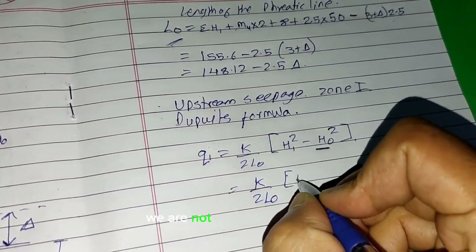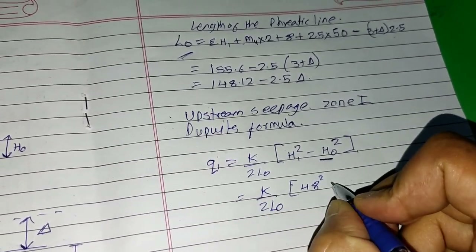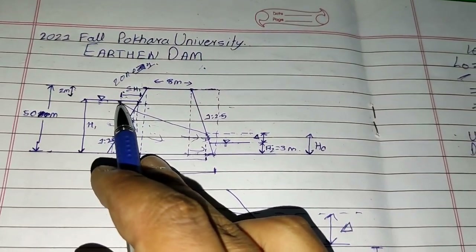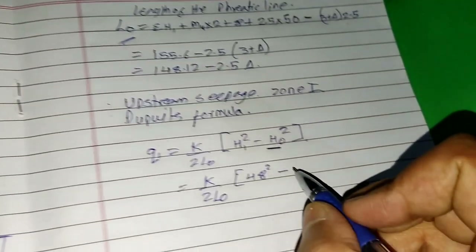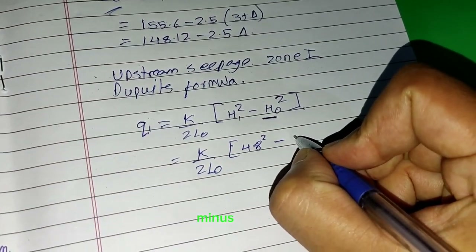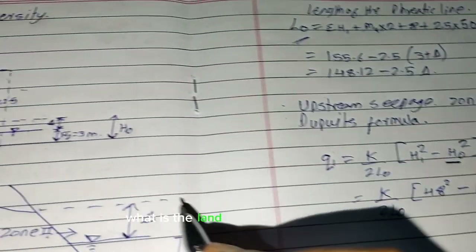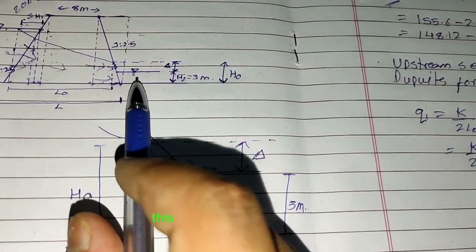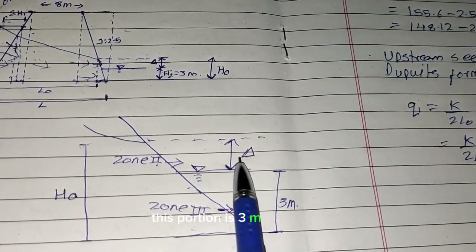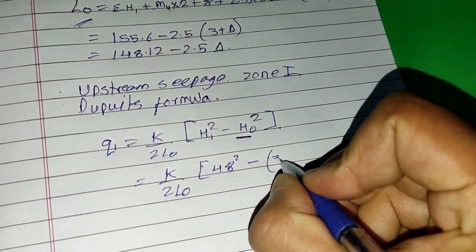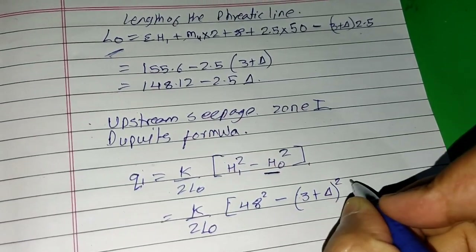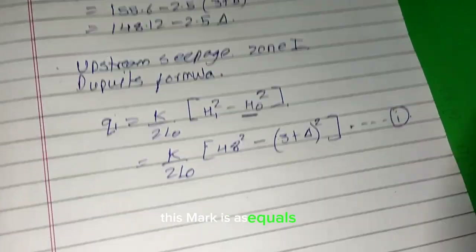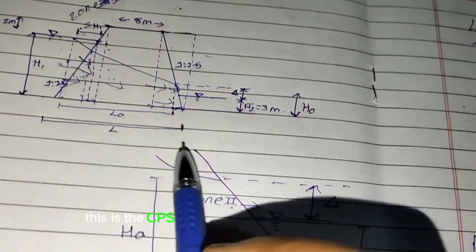Here h₁ is 48 meters, so h₁² = 48². And s₀ is the total height of that lower portion, which is (3 + delta). So the term becomes minus (3 + delta)². This is marked as Equation 1, representing the upstream seepage discharge.